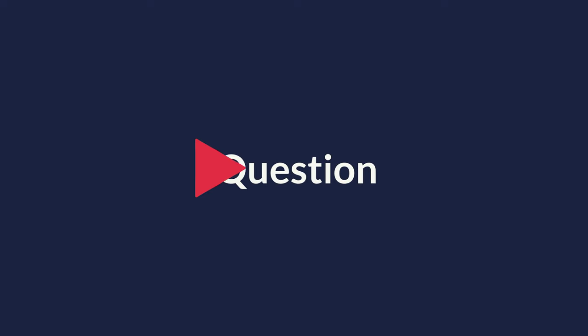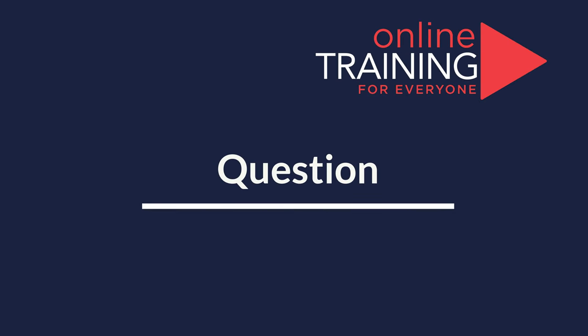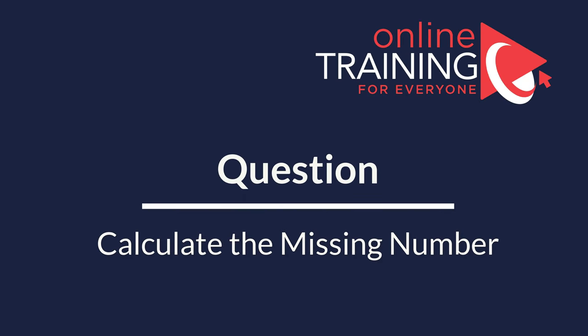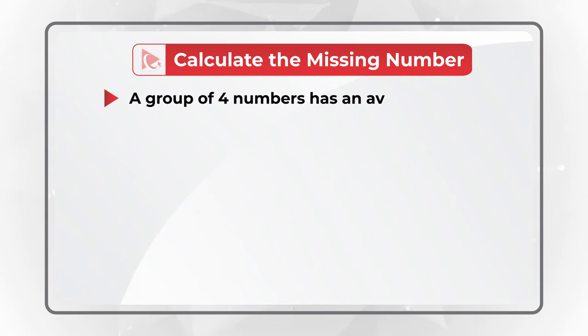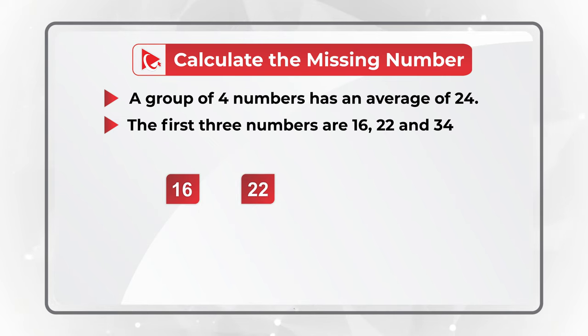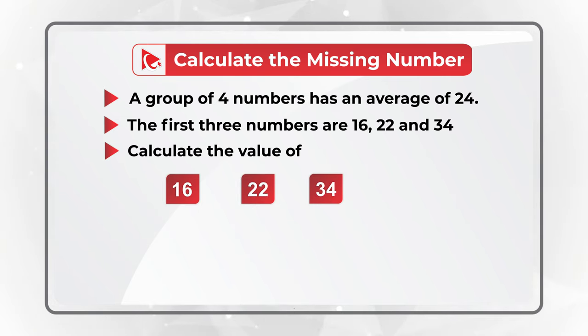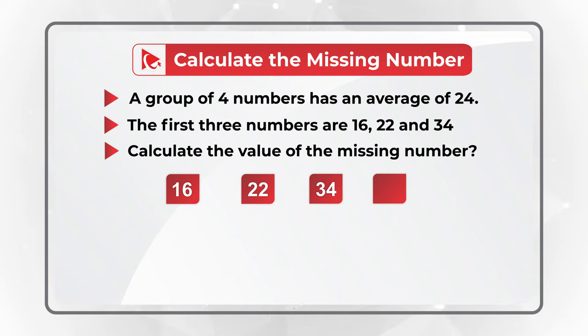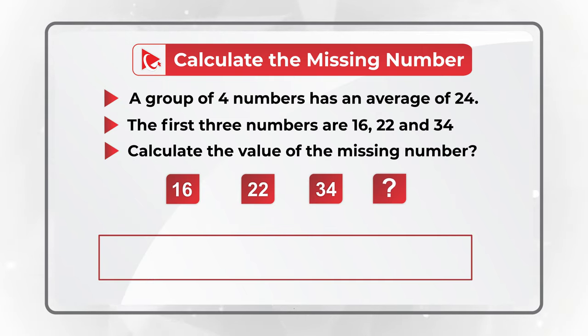Here is one of my favorite questions where you need to do mental math calculations. You are presented with a group of four numbers and this group has an average of 24. The first three numbers are 16, 22, and 34. You need to calculate the value of the missing number, which is represented as the question mark, and you have four different choices.